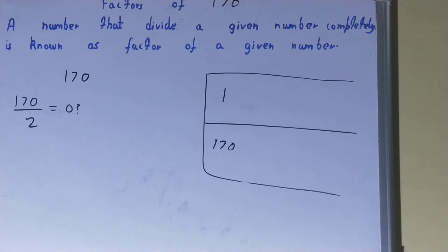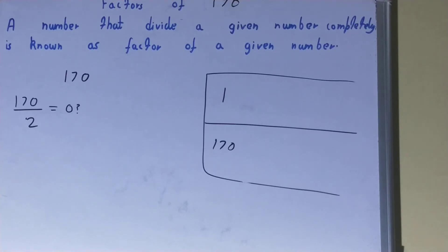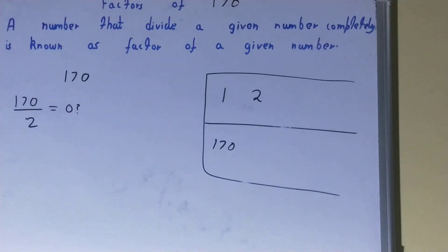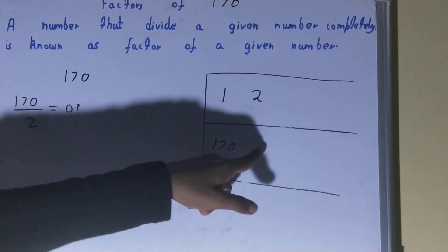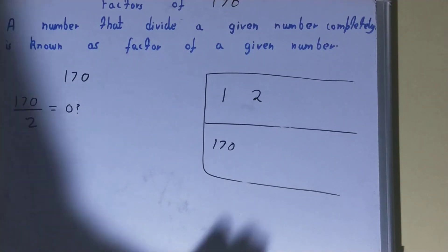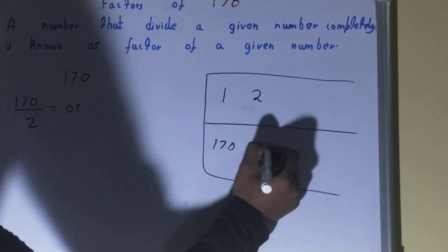After 1, we try 2. If we divide 170 by 2, will we get remainder zero? Yes, because 170 is an even number and all even numbers can be completely divided by 2. So 2 is also a factor. 2 times 85 equals 170, so 85 is also a factor.